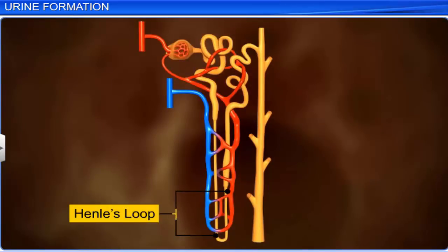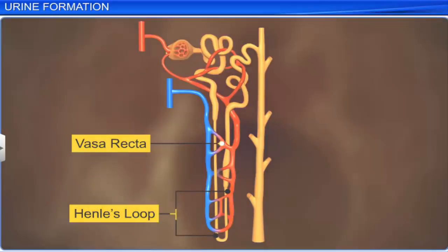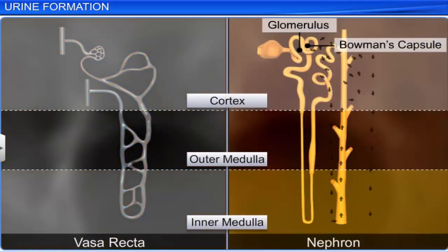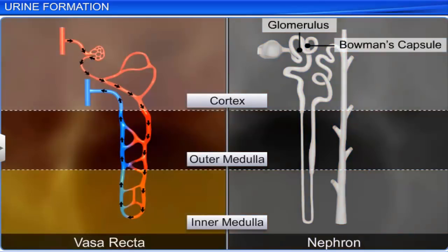Henle's loop and the vasa recta are the parts of the kidney that help concentrate the urine. A counter current is created in both these parts, because the direction of the flow of filtrate in the two limbs of Henle's loop and the flow of blood in the two limbs of the vasa recta are opposite. The counter current, along with the proximity of Henle's loop to the vasa recta, maintains an increasing osmolarity in the inner medullary interstitium.